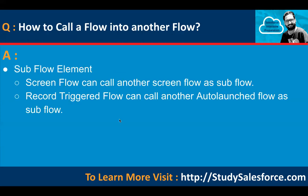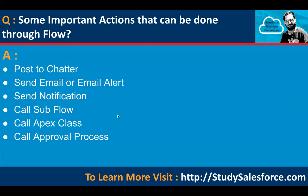How to call a flow into another flow? You can use the sub flow element. Screen flow can call another screen flow as a sub flow. Record triggered flow can call another auto-launched flow as a sub flow. Some important actions that can be done through flow: you can post to Chatter, send email or email alert actions, send notifications, call sub flow, call Apex class, and call approval process.